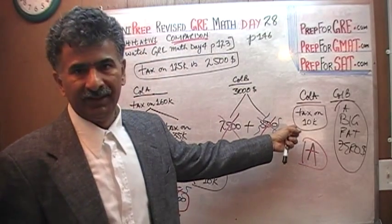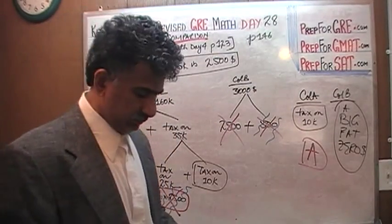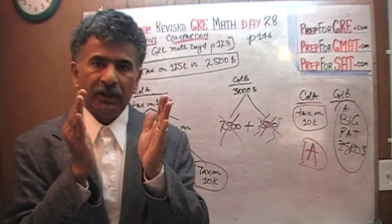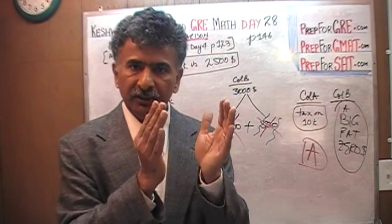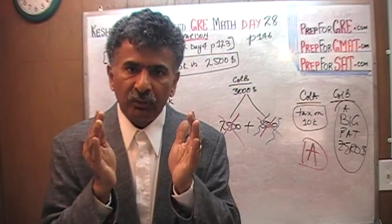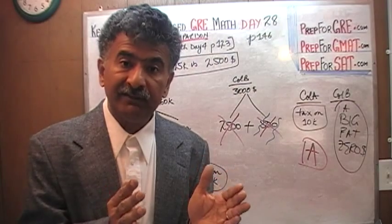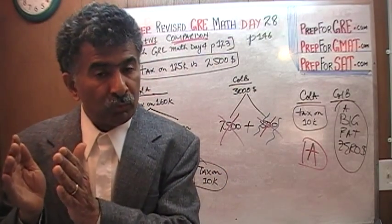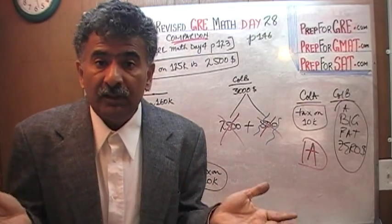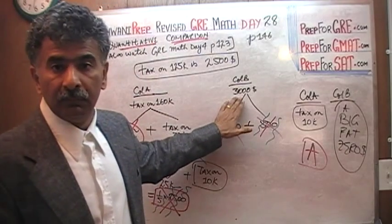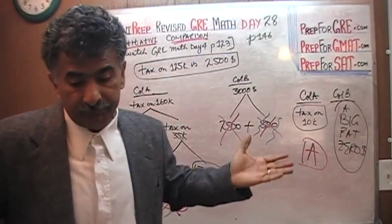I don't care what the tax is on $10,000 — whatever it is, it's got to be more than zero. Let me do it one more time quickly: $160,000 = $125,000 + $25,000 + $10,000. Tax on $125,000 is $2,500. Tax on $25,000 is $500, because $25,000 is a fifth of $125,000. That's $3,000 already — which is what's in the second column. So the tax on the remaining $10,000, whatever it is, has to be more than zero. We're done.